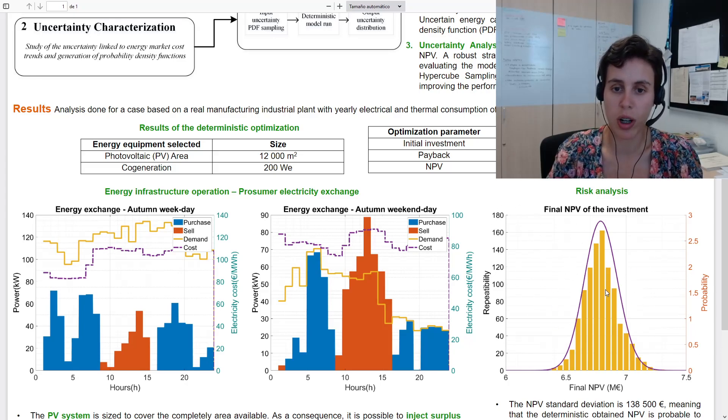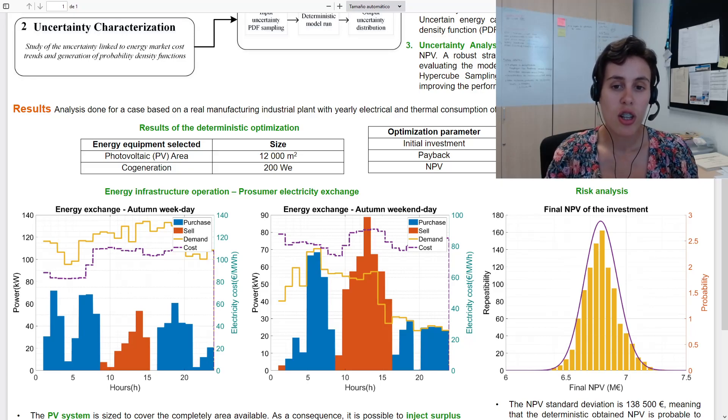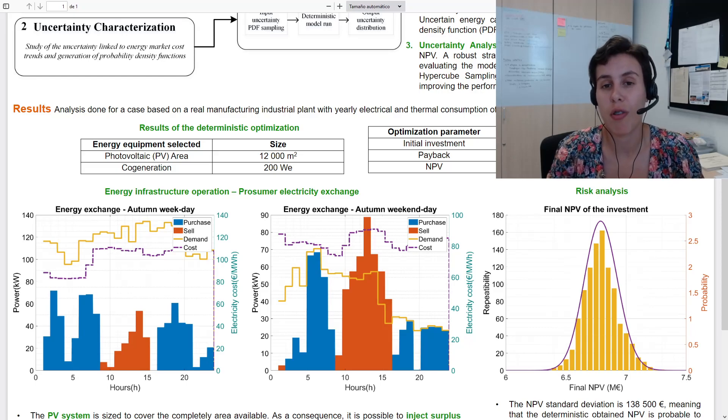Through this probability density function, it is possible to calculate the standard deviation, that is 138,000 euros, which despite being an important value represents only two percent of the final net present value. Therefore, despite energy carriers' sensitivity being considerably high, the optimal solution through this methodology is robust in front of energy carrier variability.